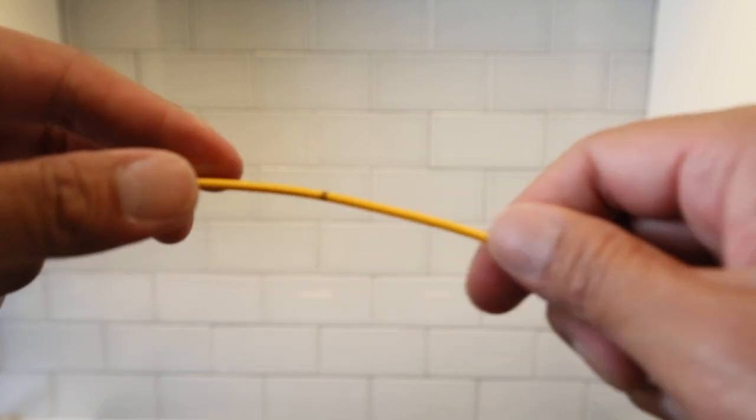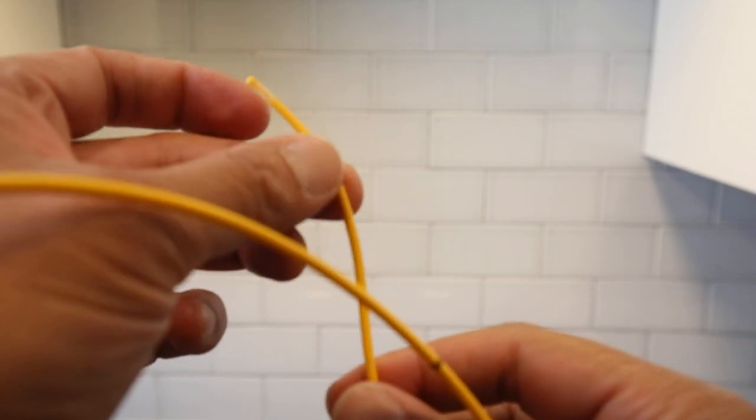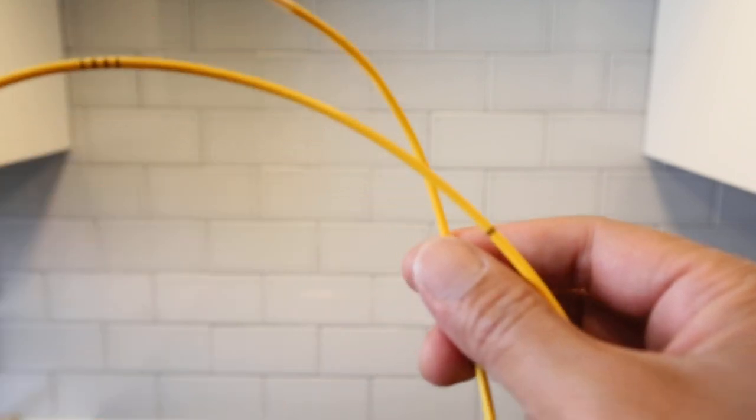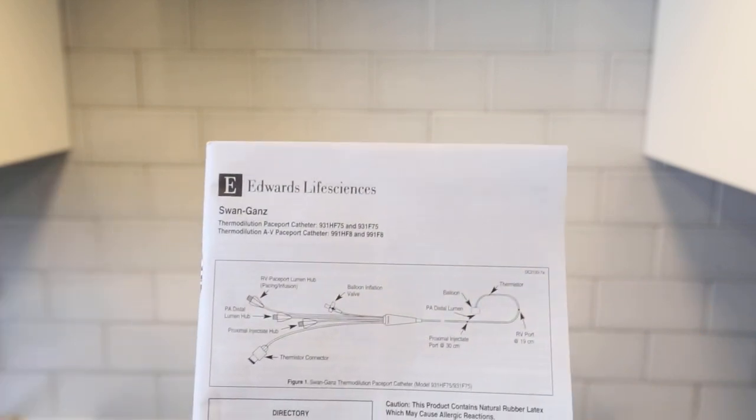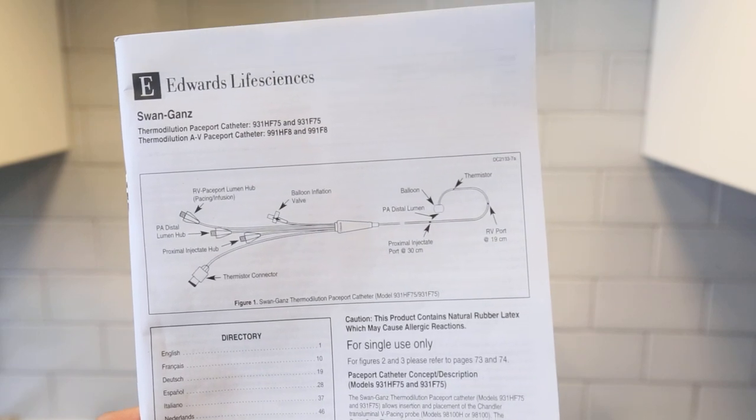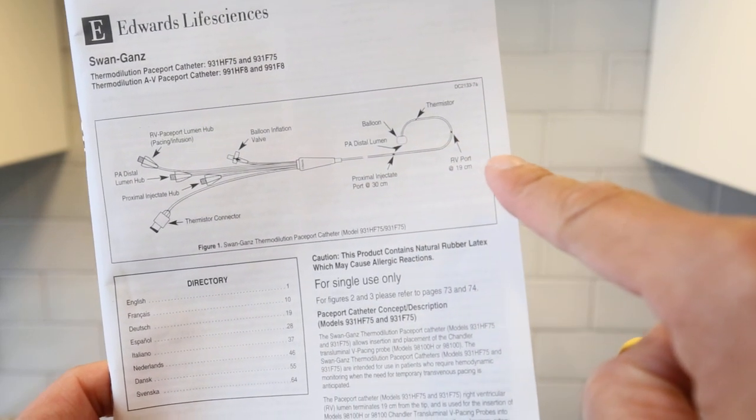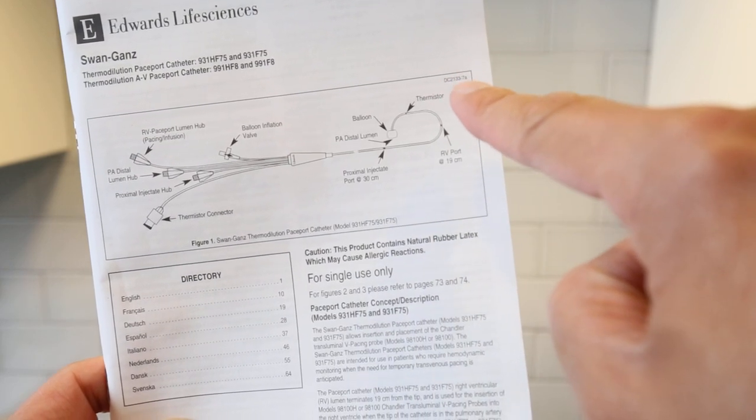So from the balloon, you have your, let me see right there. So this is your RV port and then thermodilution, proximal.